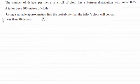Hi there. Now for this question we're given that the number of defects per meter in a roll of cloth has a Poisson distribution with a mean of 0.25. A tailor buys 300 meters of cloth, and using a suitable approximation, find the probability that the tailor's cloth will contain less than 90 defects for five marks.